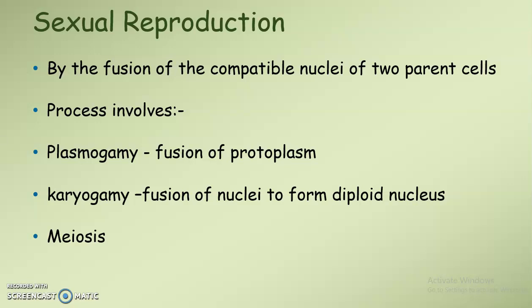In sexual reproduction we can see fusion of two compatible nuclei of the parent cells, and the process involves mainly three steps: plasmogamy, karyogamy, and meiosis. Plasmogamy means fusion of protoplasm, and karyogamy is a fusion of nuclei of the parent cells to form a diploid nucleus. This is followed by meiosis, and on meiosis we will get four haploid cells.